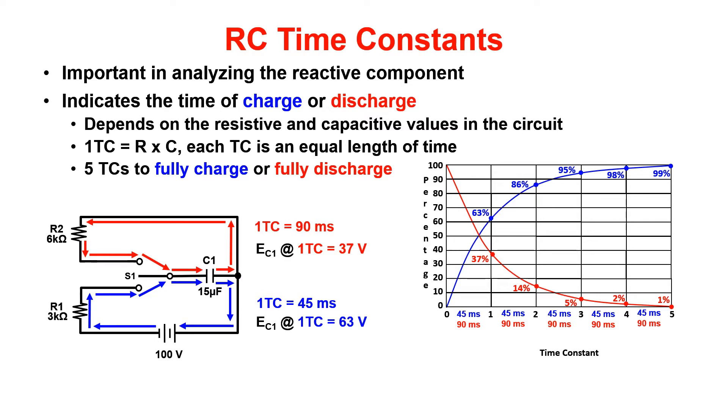Time constants indicate the amount of time a component takes to charge or discharge. In the sample below, the charge path is indicated by the blue line and includes a power supply. The discharge path is shown in red.